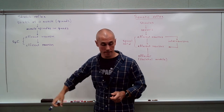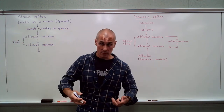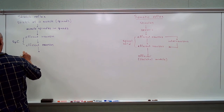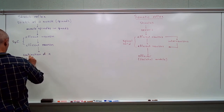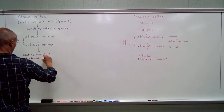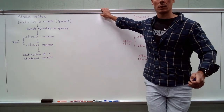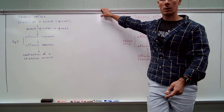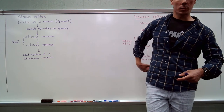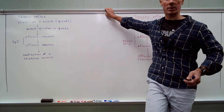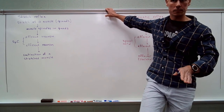The efferent neuron sends the information to the effector, resulting in contraction of the stretched muscle. The physician taps on the patellar tendon, the stretch is sensed, the signal goes to the spinal cord, and from the spinal cord the response reaches the quadriceps — the quadriceps contracts and you have a knee-jerk.